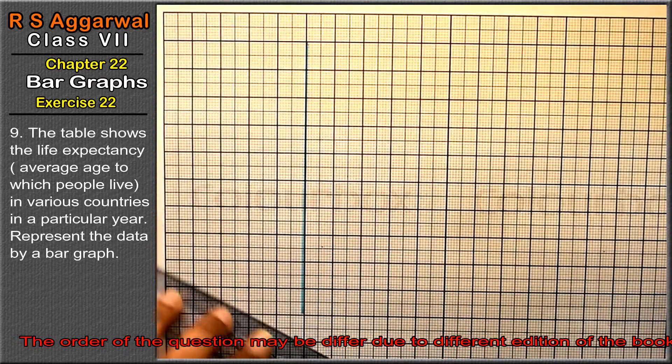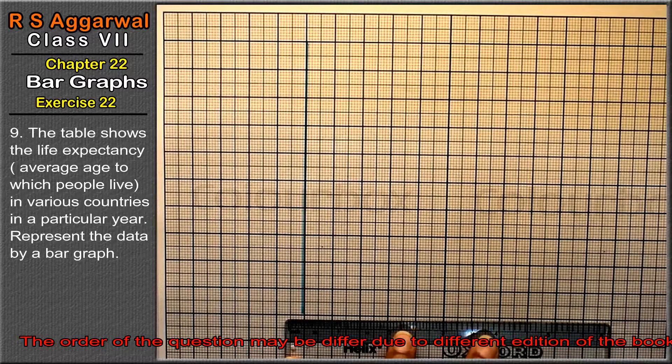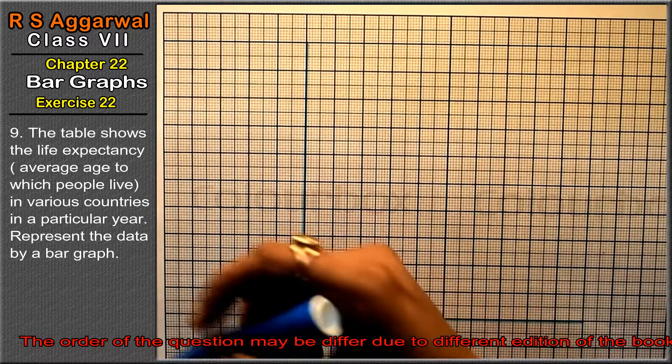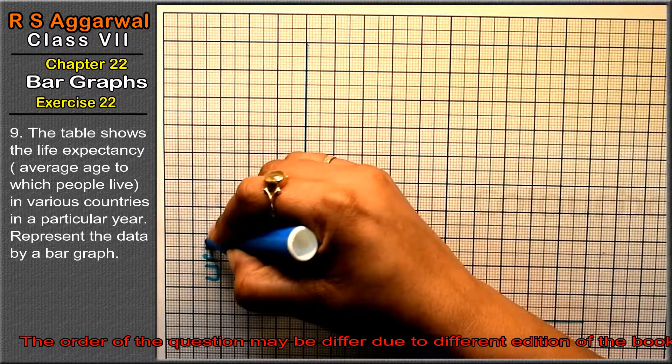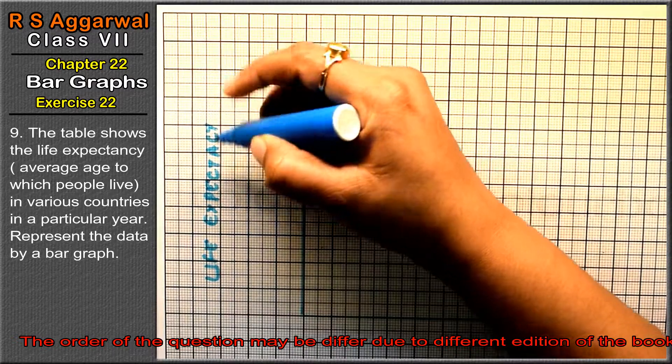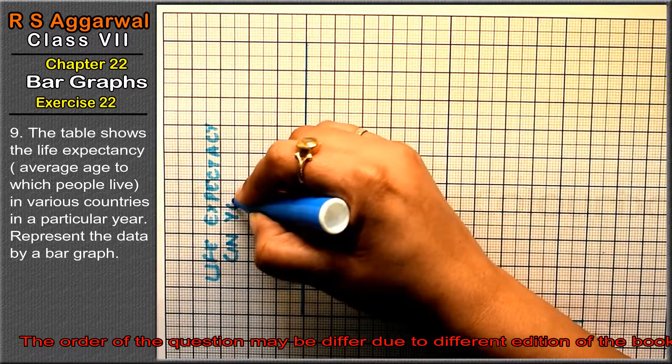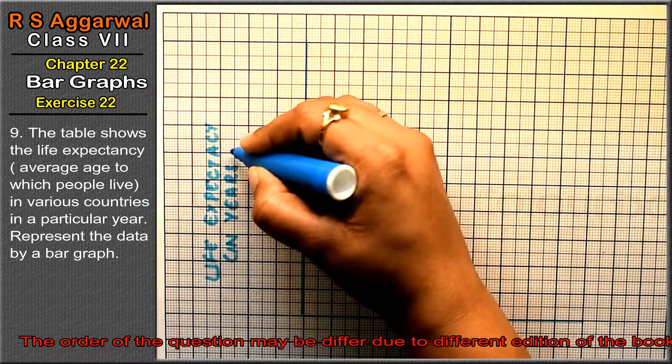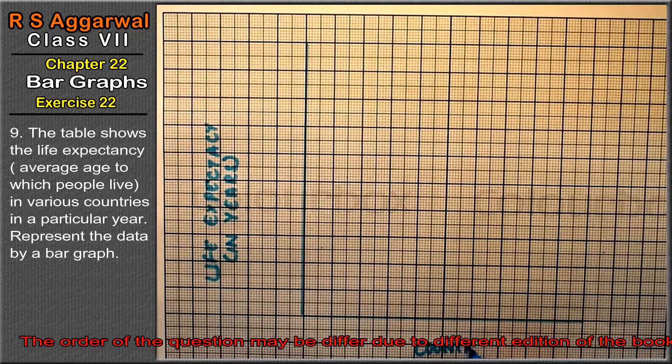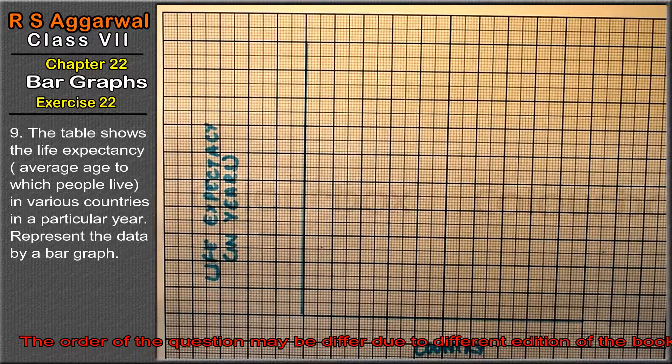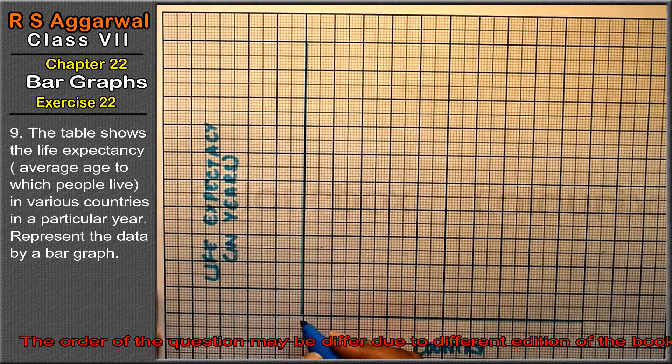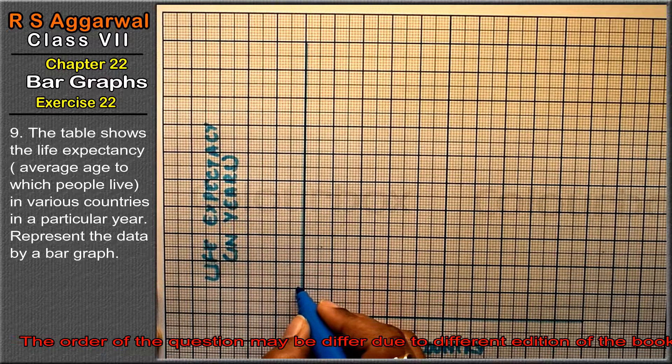First I'm making the y-axis, then the x-axis. On the y-axis we write 'Life Expectancy in Years', and on the x-axis we write 'Country'. Since the values are large, we'll use one small division equals 10.